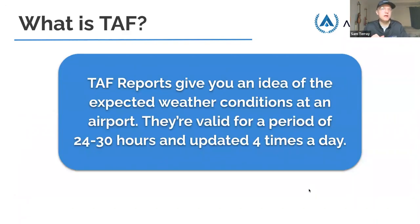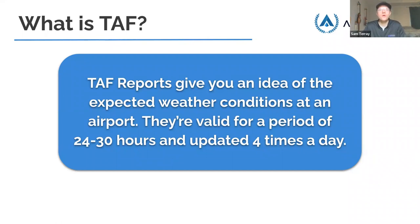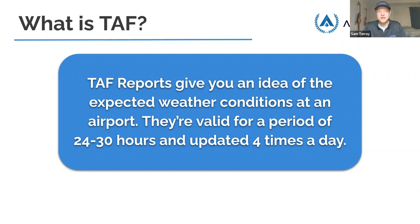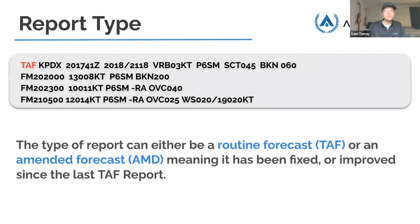So what is a TAF? A TAF report gives you an idea of the expected weather conditions at an airport. TAF stands for terminal aerodrome forecast. They're valid for a period of 24 to 30 hours and updated four times a day. Unlike a METAR which is a snapshot in time, a TAF is a forecast for the future. They're updated every six hours — four times six is 24 or five times six is 30, which is why the valid period is 24 to 30 hours.